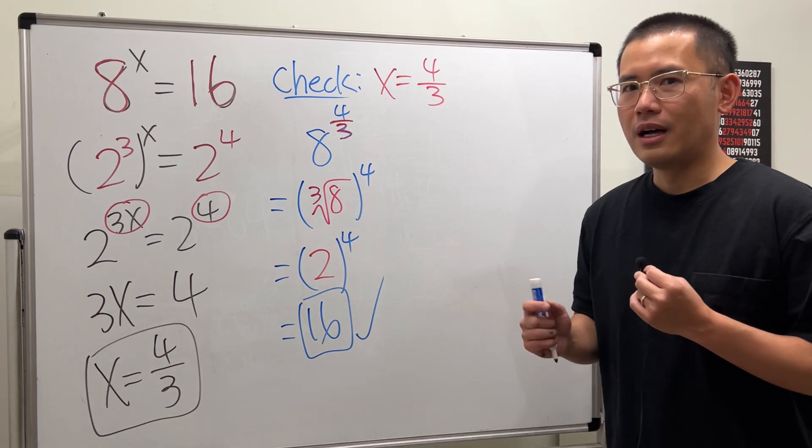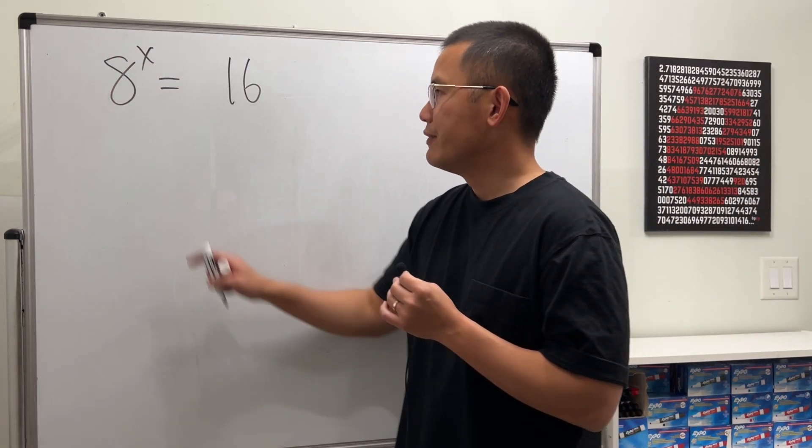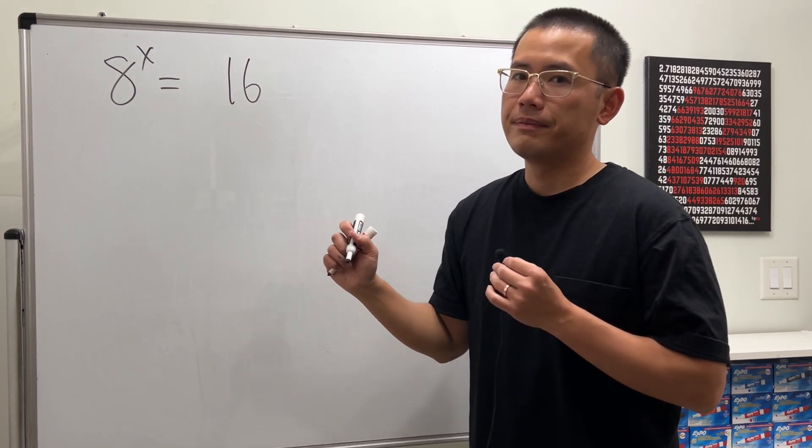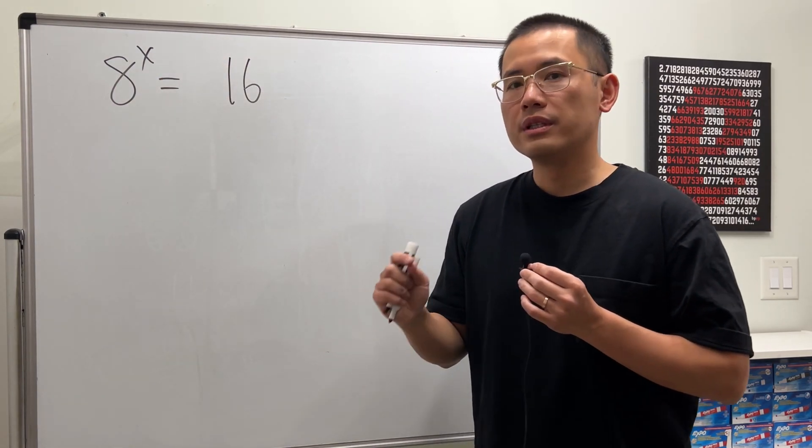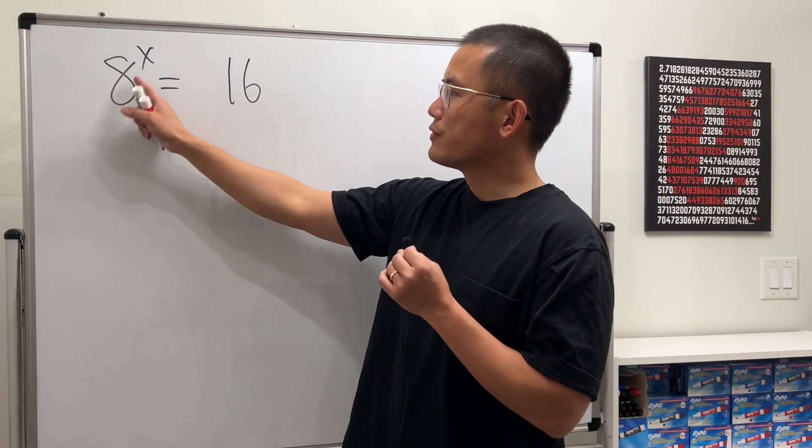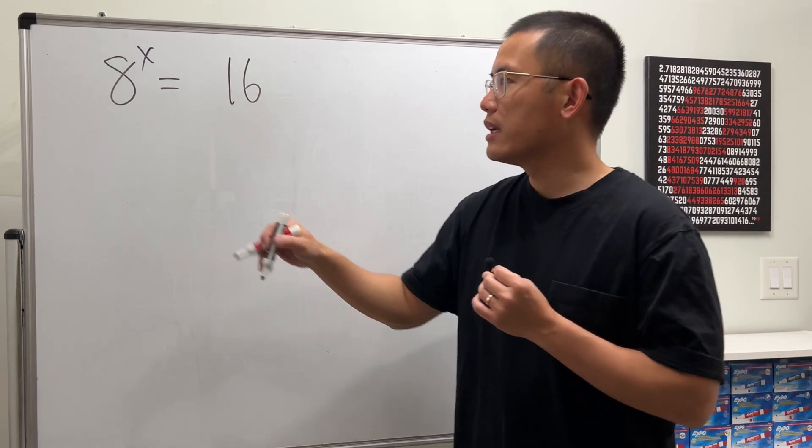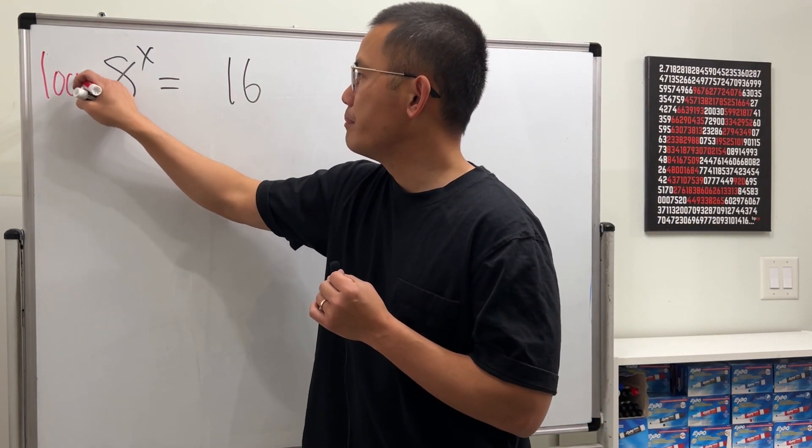Now, what is the logarithm way? Let's have a look. So here we go. Again, we have 8 to the x is equal to 16. x is in the exponent. Then in this case, we can try to take the logarithm on both sides. And because the base for this exponent part right here is 8, we are going to take log with the same base 8.